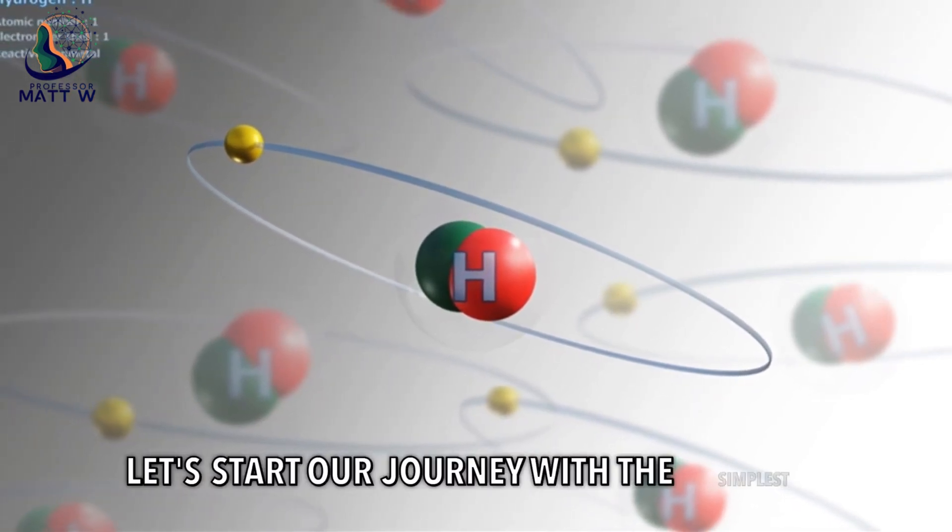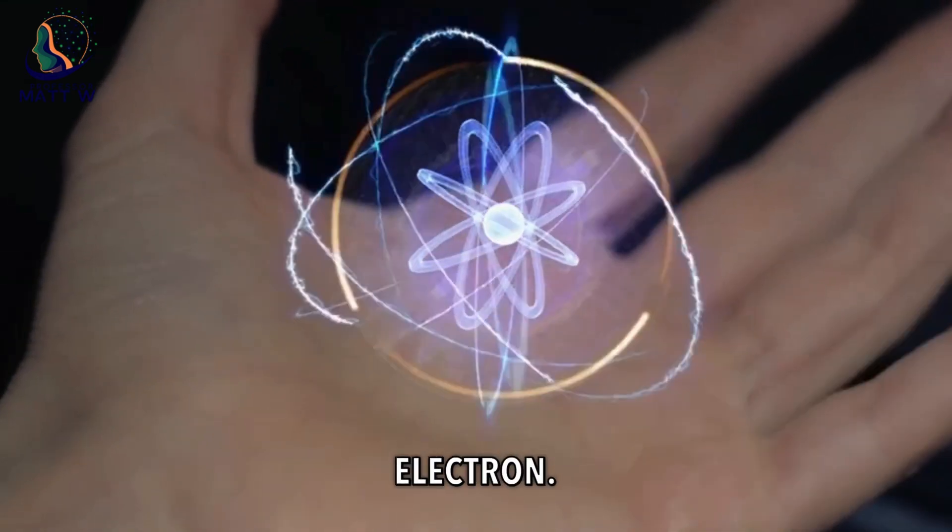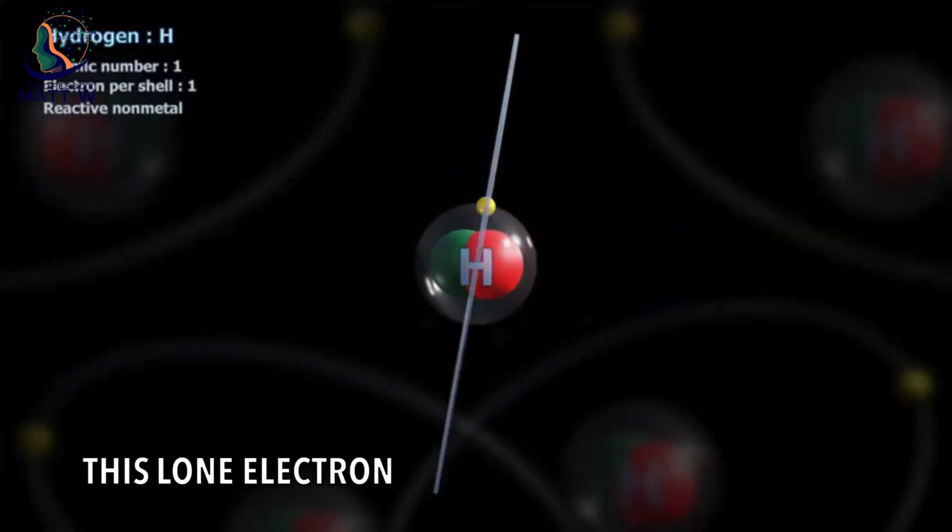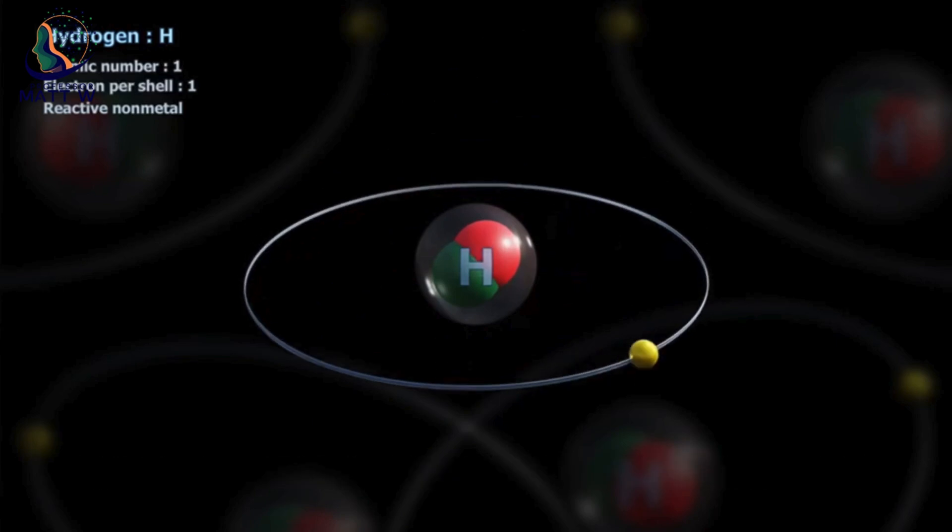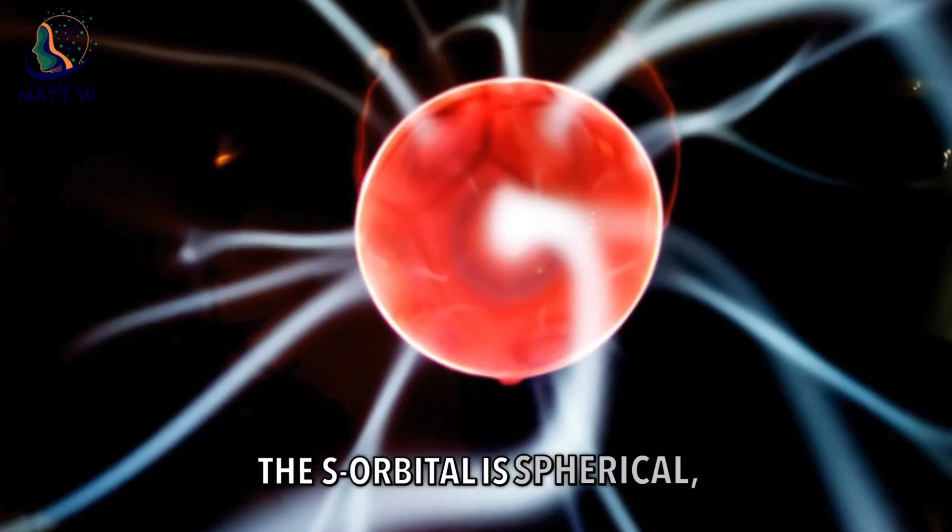Let's start our journey with the simplest atom, hydrogen. It has just one proton and one electron. This lone electron occupies the lowest energy level, called the s orbital. The s orbital is spherical, like a fuzzy cloud surrounding the nucleus.